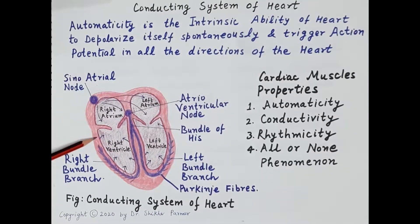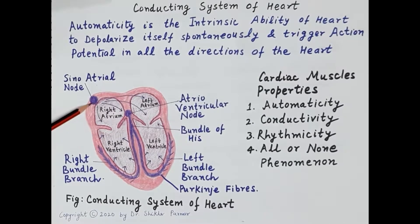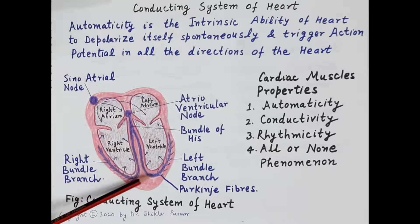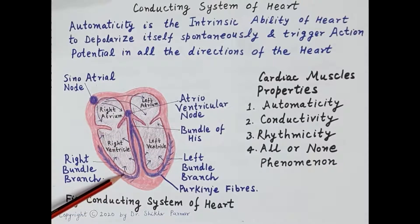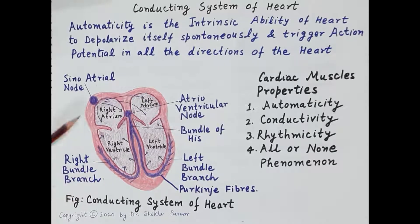This diagram shows the conducting system of the heart. The elements of the conducting system are: the sinoatrial node, the atrioventricular node, the bundle of His, the left and right bundle branches, and the small fibers called Purkinje fibers.